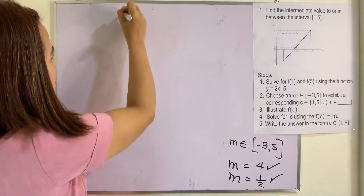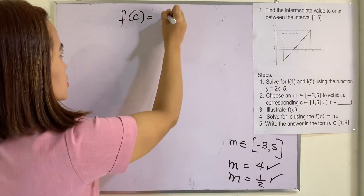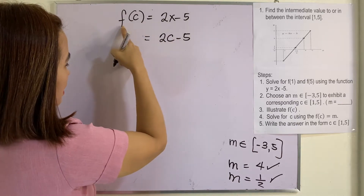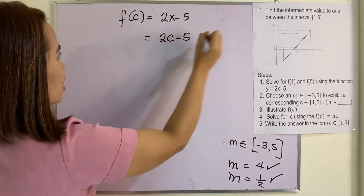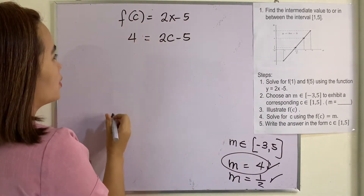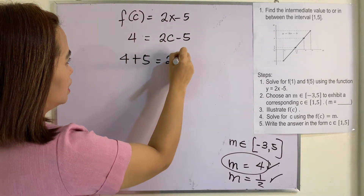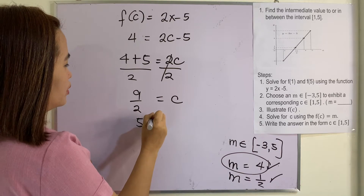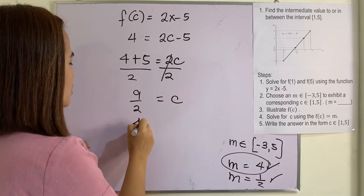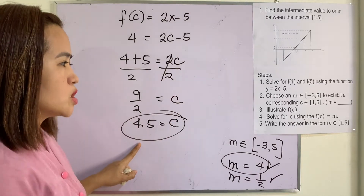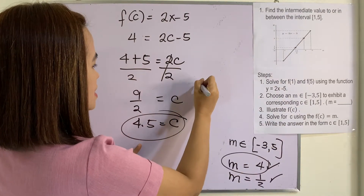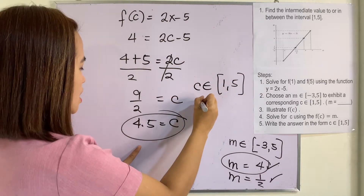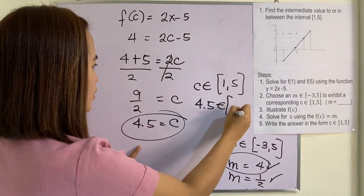Let us now illustrate f(c). So f(c) is equal to 2x minus 5. This time, we will be replacing x by c, so this is 2c minus 5. But f(c) is equal to m. Our m here is 4. So 4 plus 5 equals 2c, then divided by 2 on both sides. Our c here is 9/2, or that is 4.5. Is c an element of [1, 5]? Yes, 4.5 is an element of [1, 5].